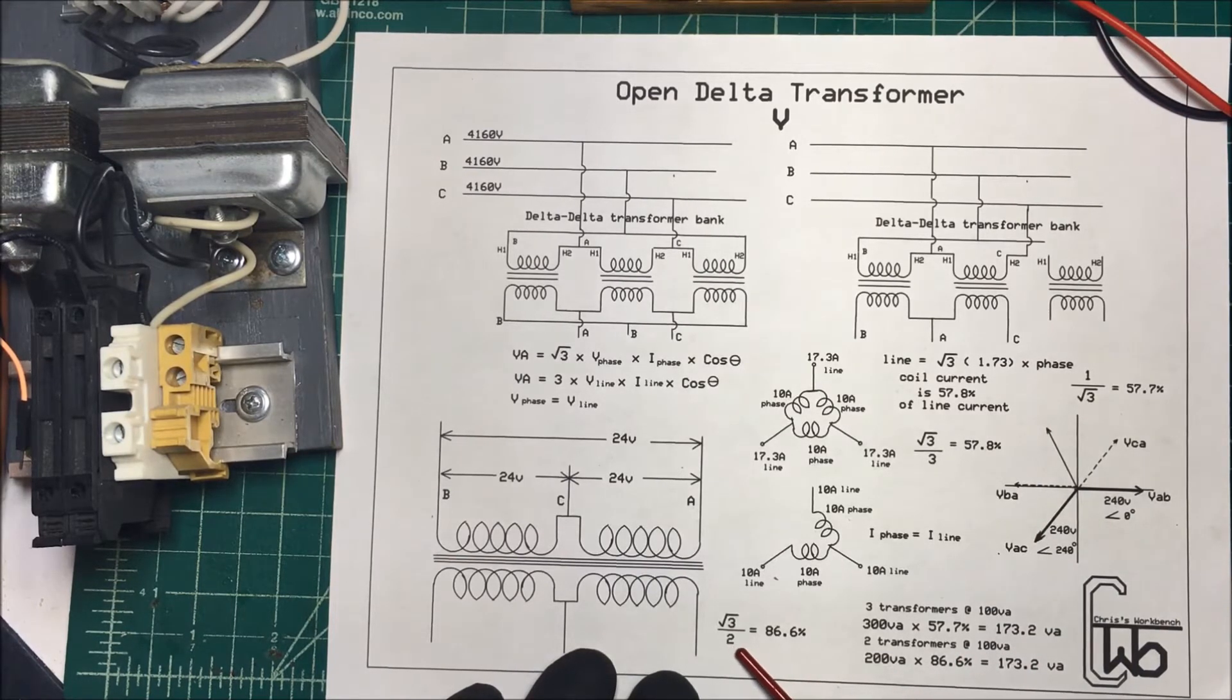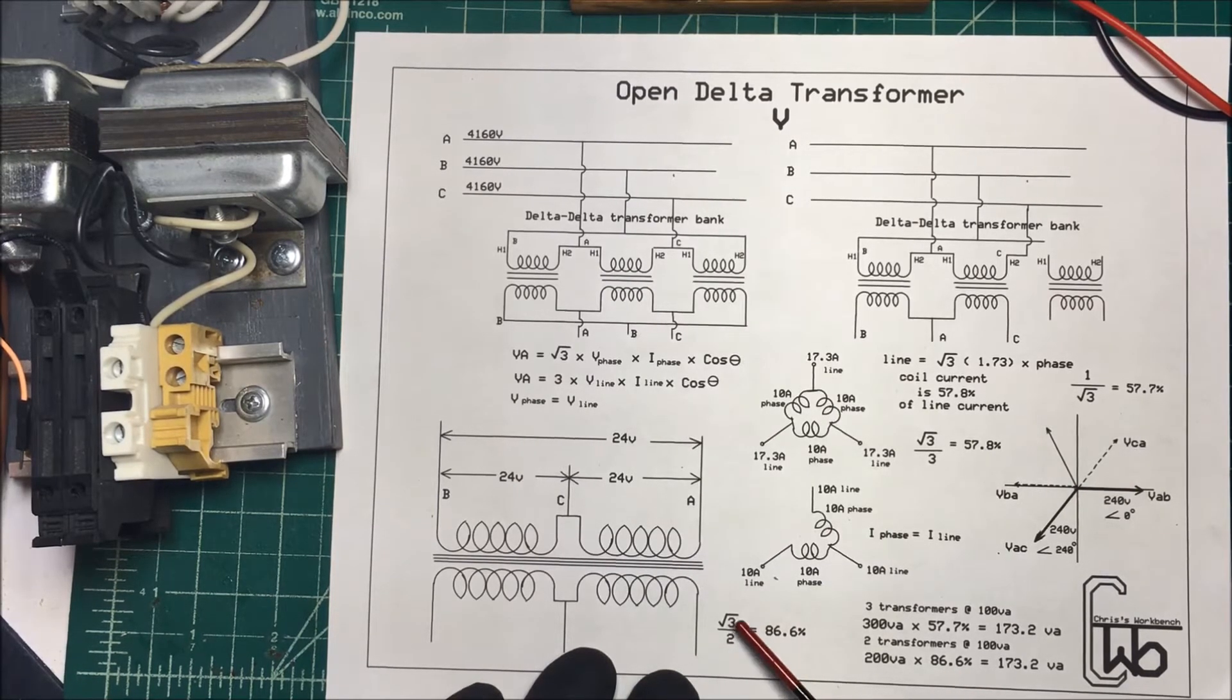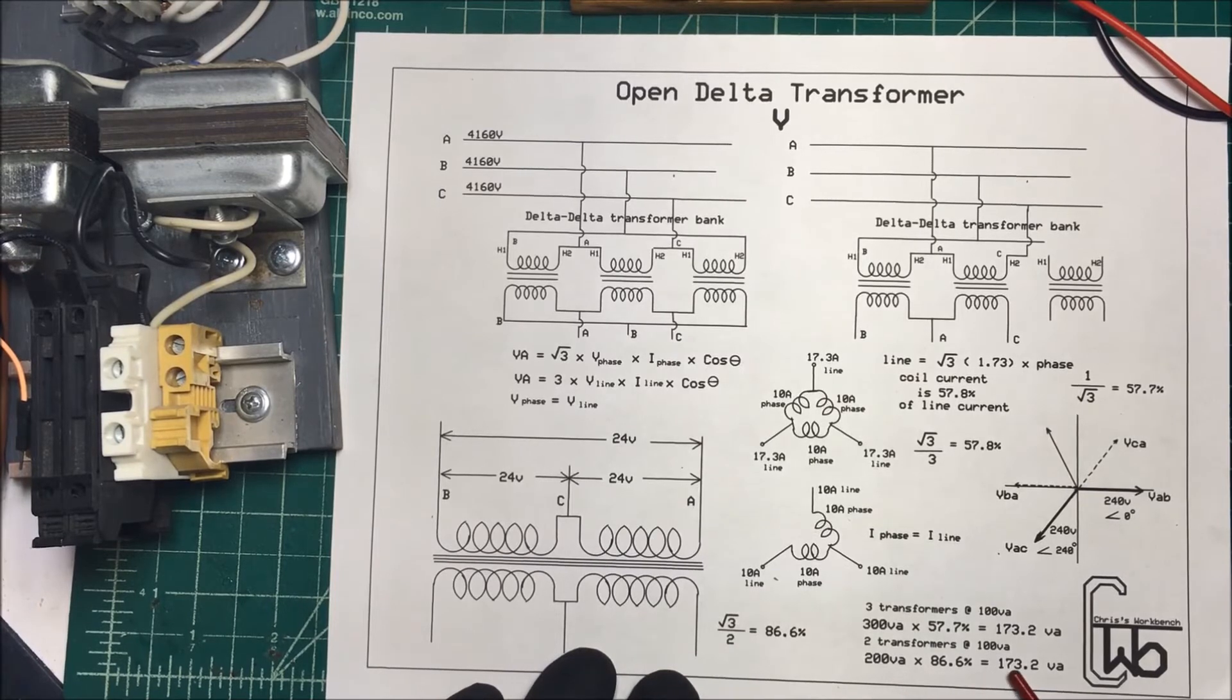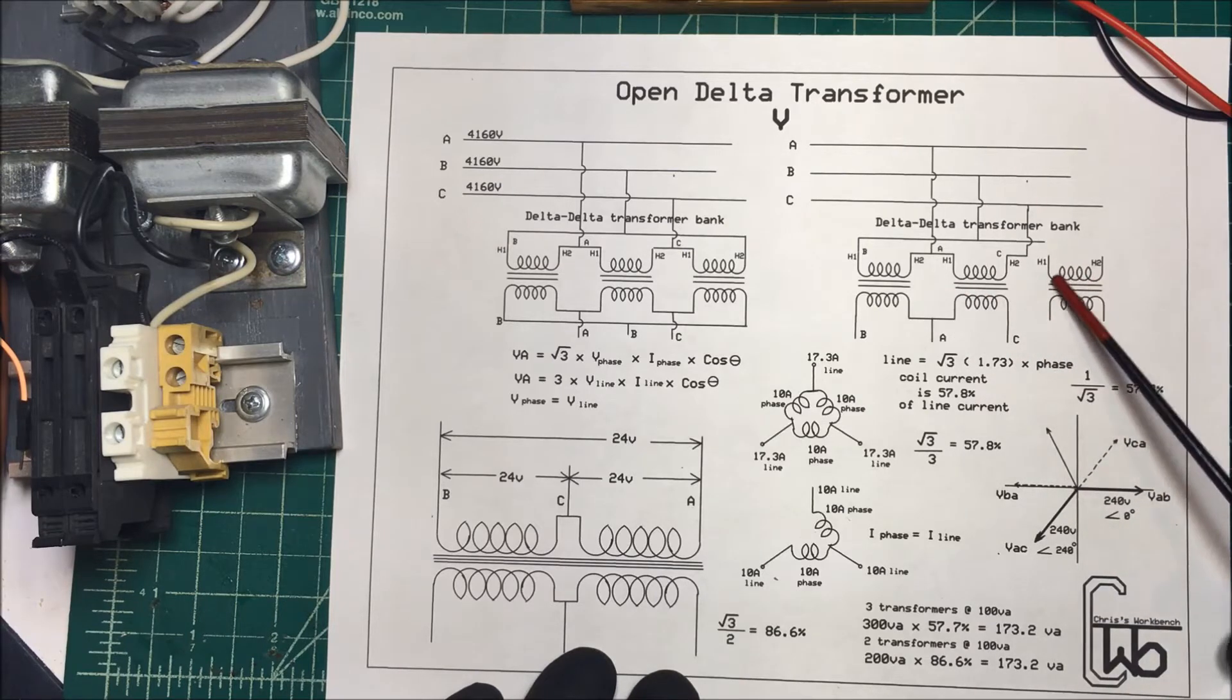now we take it times the 86.6 and that's just two divided into our square root of three here. And that comes out to the same thing. It comes out to 173 VA. So by eliminating one of the transformers, your wattage is going to be cut down to 57% of the total there.